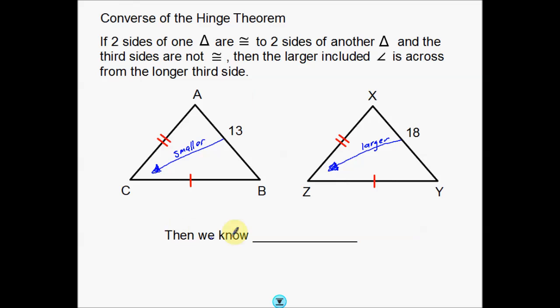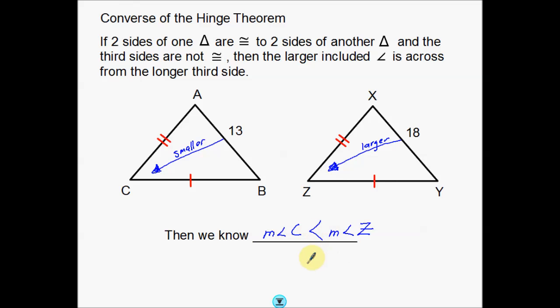So then what do we know? The measure of angle C is actually going to be smaller than the measure of angle Z. Z is actually the bigger angle. So I use my less than symbol there to compare those two angles.